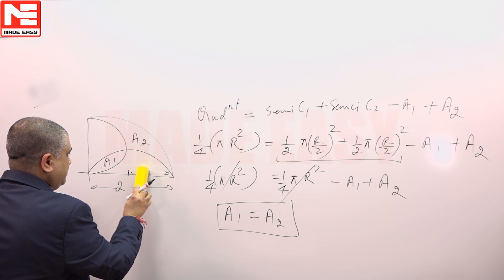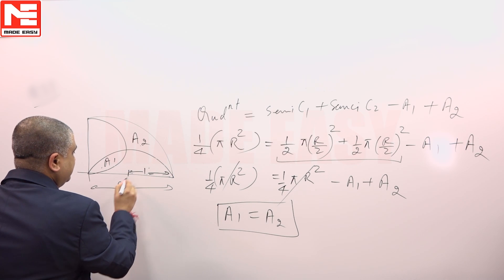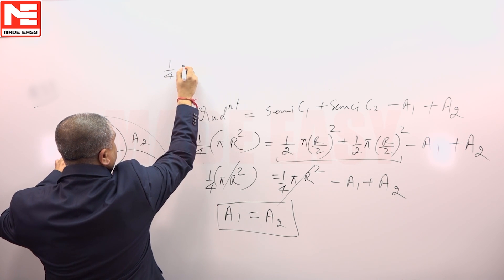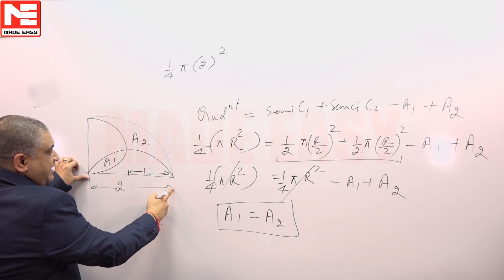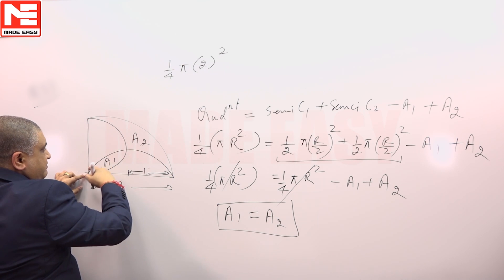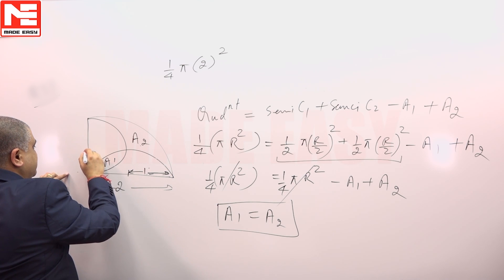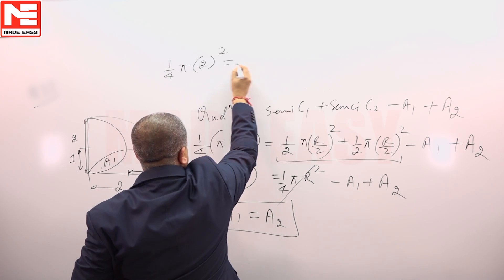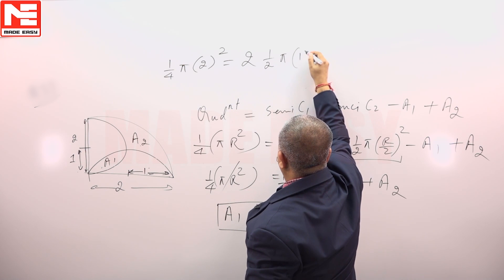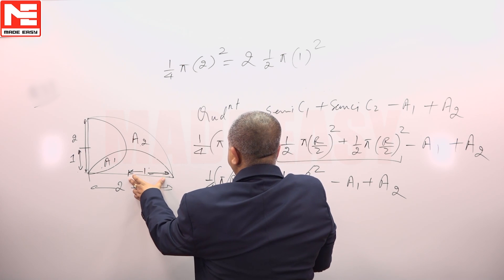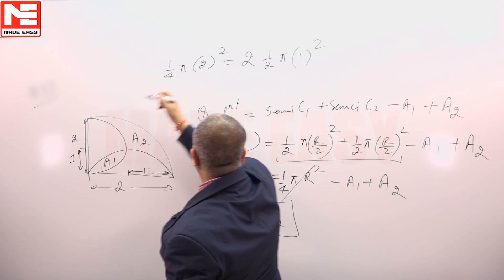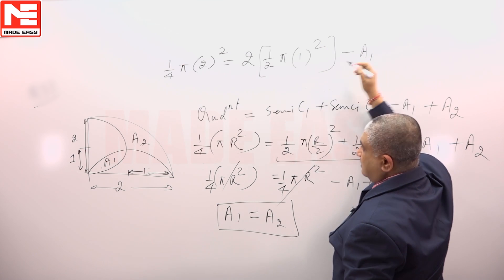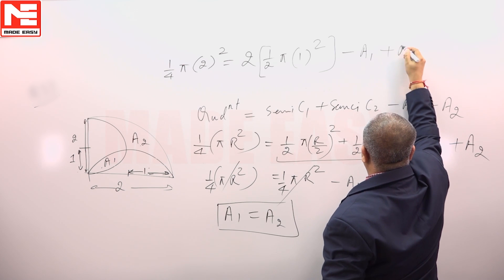With the radius of the quadrant as 2 units, the radius of each semicircle will be 1 unit. Area of the quadrant = (1/4)π(2)² = π. This quadrant is made up of the first semicircle plus the second semicircle, both having radius 1. So we have 2 × (1/2)π(1)² minus a1 plus a2, giving π − a1 + a2.